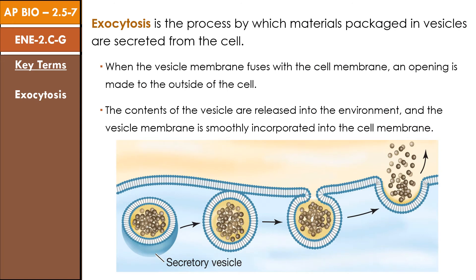Exocytosis is the process by which materials packaged in vesicles are secreted from the cell. When the vesicle membrane fuses with the cell membrane, an opening is made to the outside of the cell. The contents of the vesicle are released into the environment, and the vesicle membrane is smoothly incorporated into the cell membrane. We encountered exocytosis as the last step in phagocytosis — the release of digested materials back into the extracellular environment. Secreted proteins are also transported out of the cell via exocytosis: proteins are folded and modified in the endoplasmic reticulum, then transported in vesicles to the Golgi apparatus where they may be further modified, and finally packaged in new vesicles for secretion.